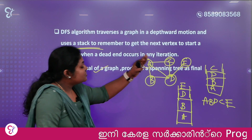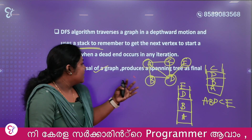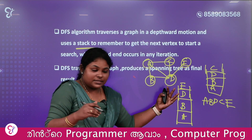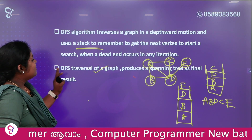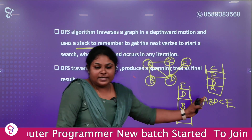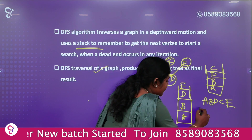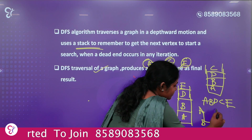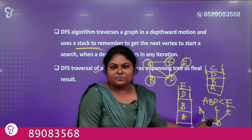Remember to get the next vertex to start a search — the backtracking process. The DFS traversal output is A, B, D, C, E. Now we have a spanning tree formed out with nodes A, B, D, C, E.